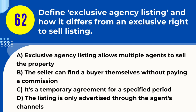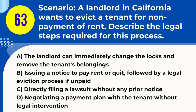Question 62. Define exclusive agency listing and how it differs from an exclusive right to sell listing. A. Exclusive agency listing allows multiple agents to sell the property. B. The seller can find a buyer themselves without paying a commission. C. It's a temporary agreement for a specified period. D. The listing is only advertised through the agent's channels. Answer: B. Explanation. In an exclusive agency listing, the property owner agrees to work with one real estate agent to sell the property but retains the right to find a buyer themselves. If the seller finds the buyer, they are not required to pay a commission to the agent. This differs from an exclusive right to sell listing, where the agent receives a commission regardless of who finds the buyer.